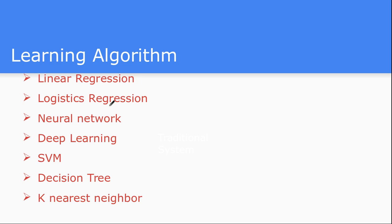Most of these algorithms are implemented in the Scikit-learn library. For specific algorithms, we may use different libraries. Deep learning is currently getting very famous and is implemented in Google's open-source library TensorFlow, or the Theano library.